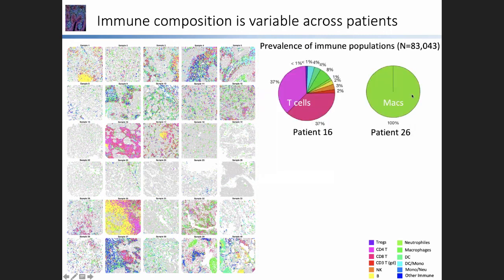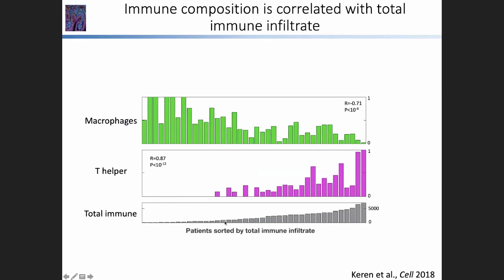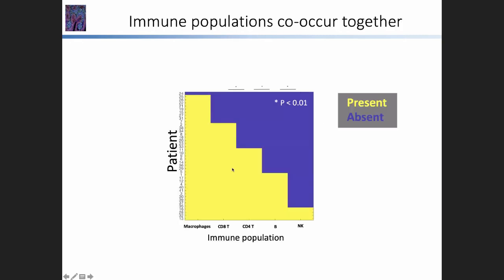What immediately jumps out is a very large heterogeneity in immune composition across patients. For example, patient 26 has predominantly macrophages in her tumor, whereas patient 16 has predominantly T cells. We sorted all patients according to their total immune infiltration and found that immune composition was correlated with total immune infiltrate — the more immune cells a patient had, the larger the fraction of T helper cells and the smaller the fraction of macrophages — suggesting some co-dependence between immune populations in the tumor.